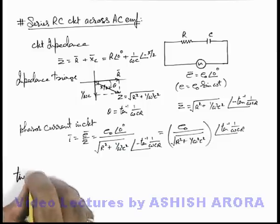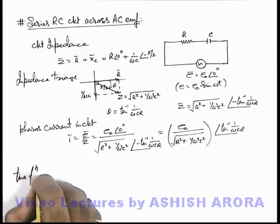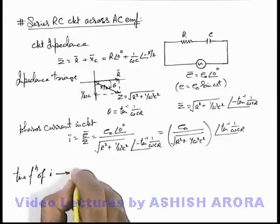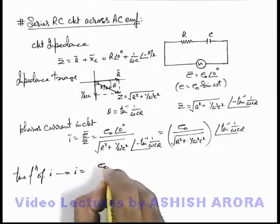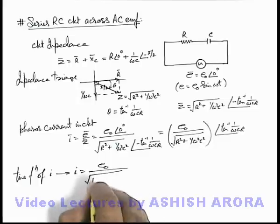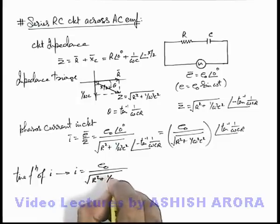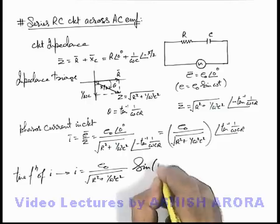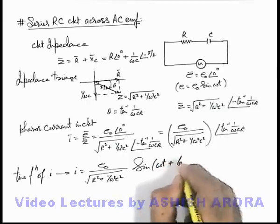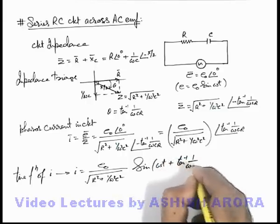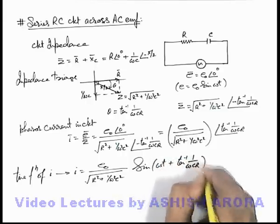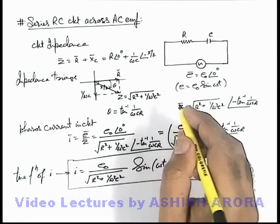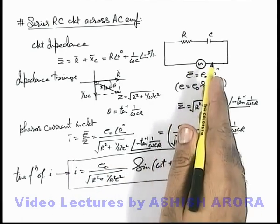Writing down the time function of current, i equals e-not divided by the square root of R-squared plus 1 by omega-squared C-squared, multiplied by sine of omega-t plus tan-inverse of 1 by omega-C-R. This is the time function of current flowing in a series RC circuit.